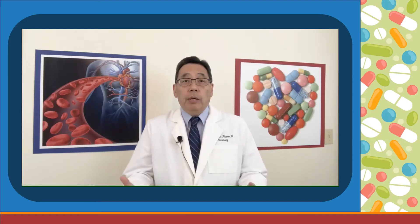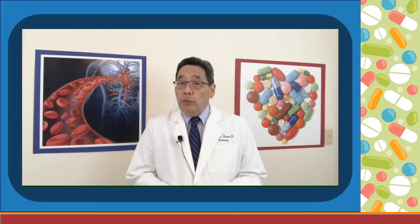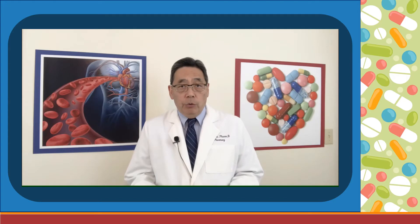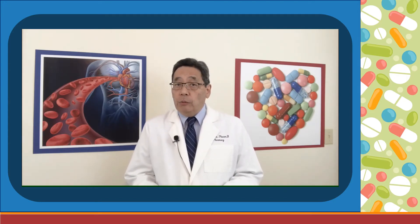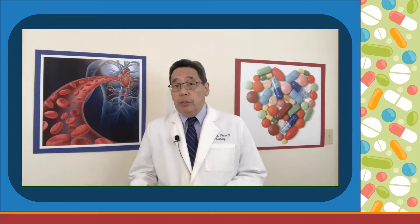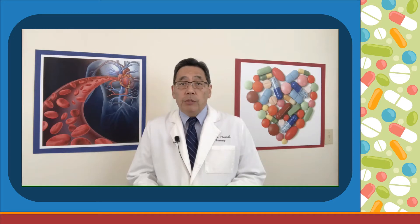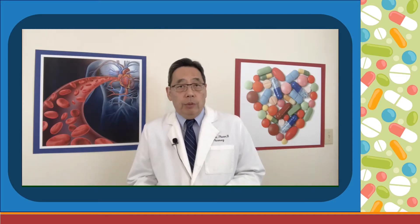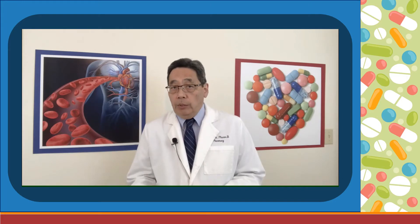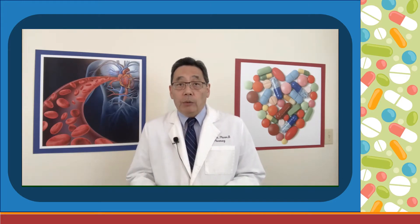Hi everyone and welcome back. In Part 3 of this lecture series, we will answer the question: what happens when catecholamines don't work? The alternative agents used for refractory shock — vasopressin and angiotensin II — will be discussed in depth. I will also review adjunctive agents, the so-called rescue agents, and discuss their relative benefits. All of this in Part 3: Refractory Shock.